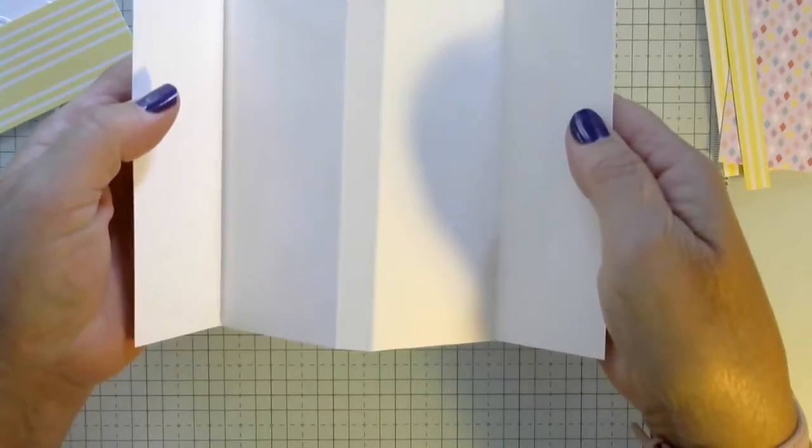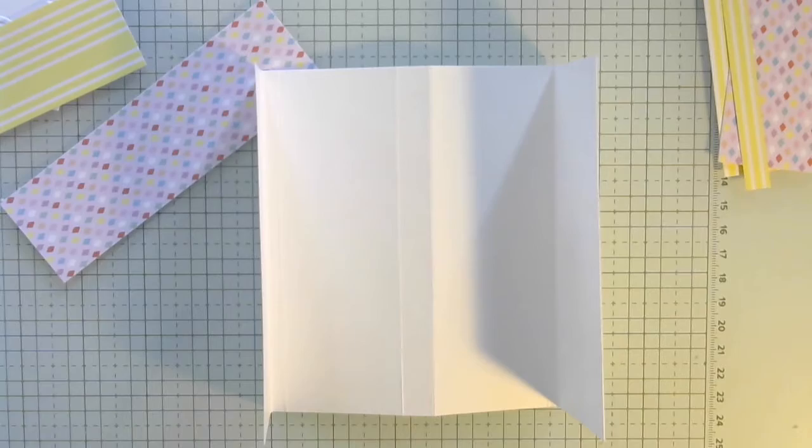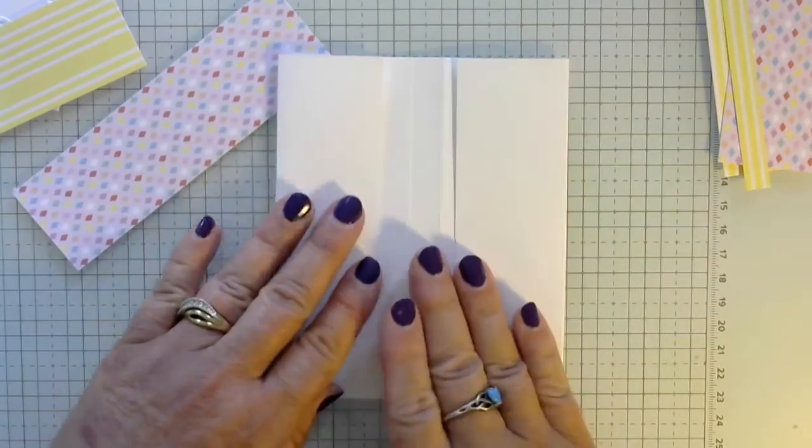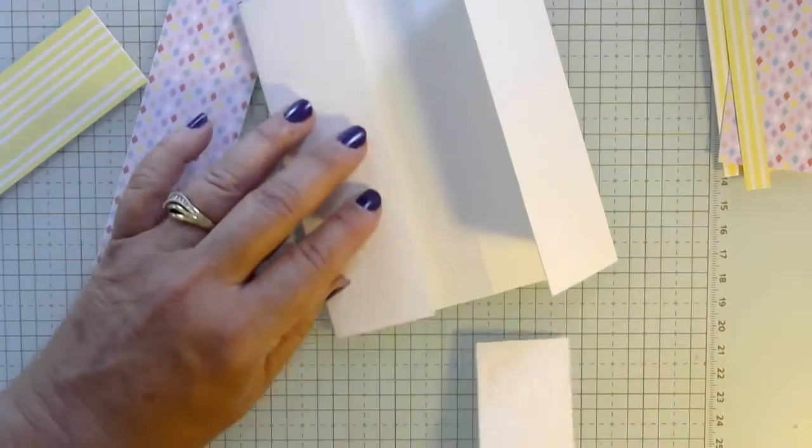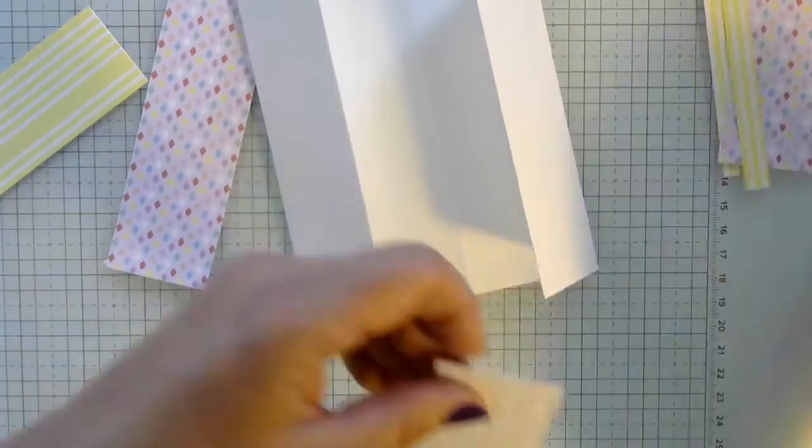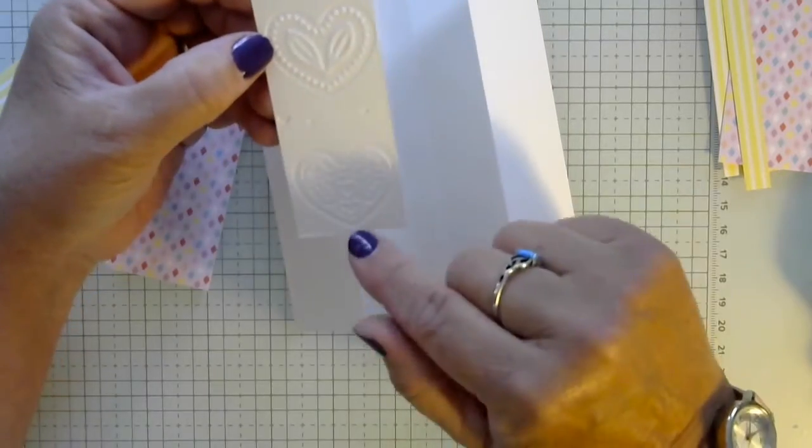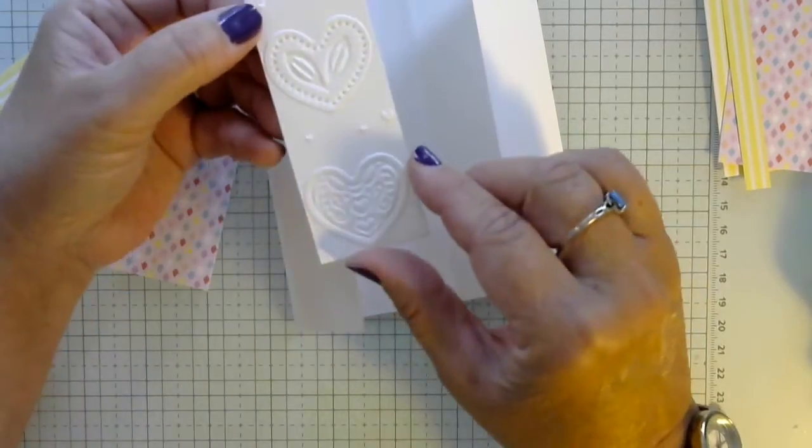So our card is going to sit closed like this. And then it'll open like this. So it's an M-fold card. So let's go ahead and start putting our layers on.